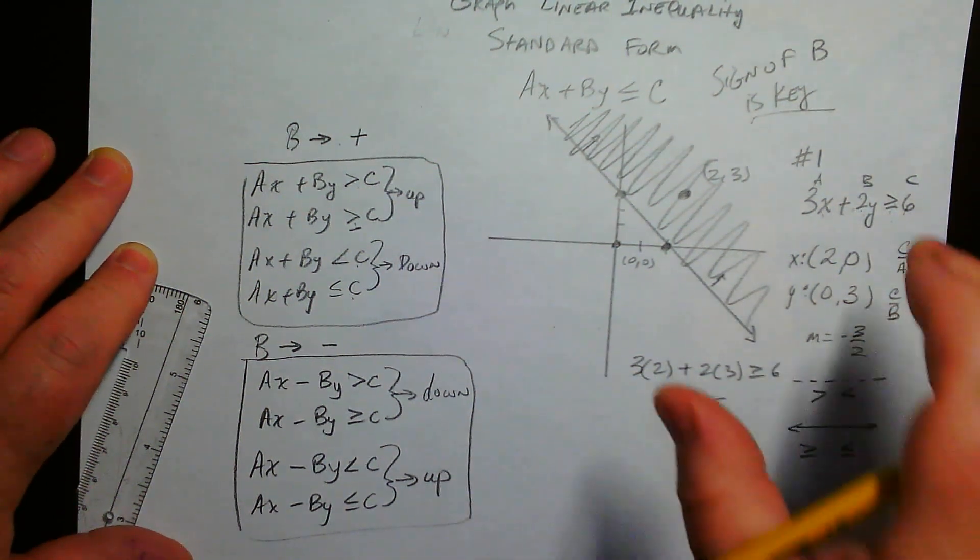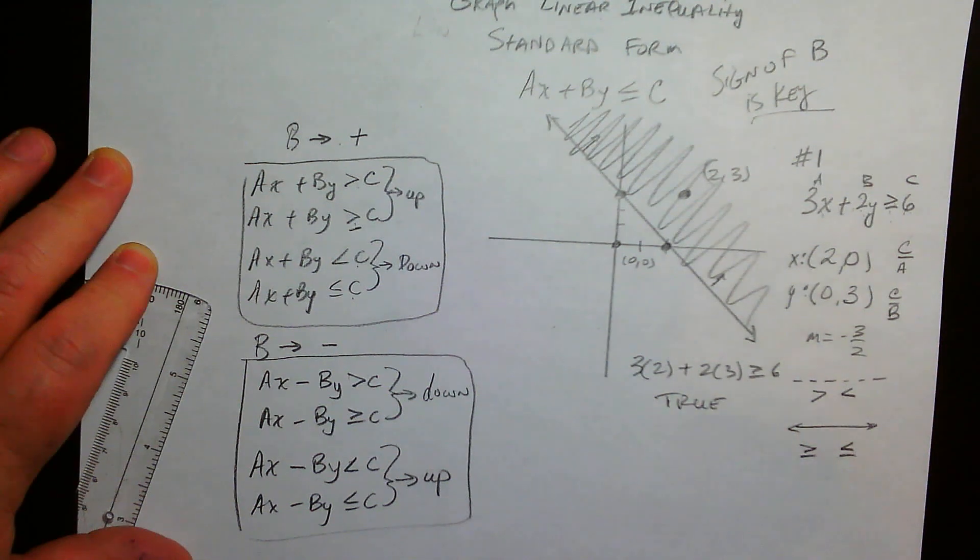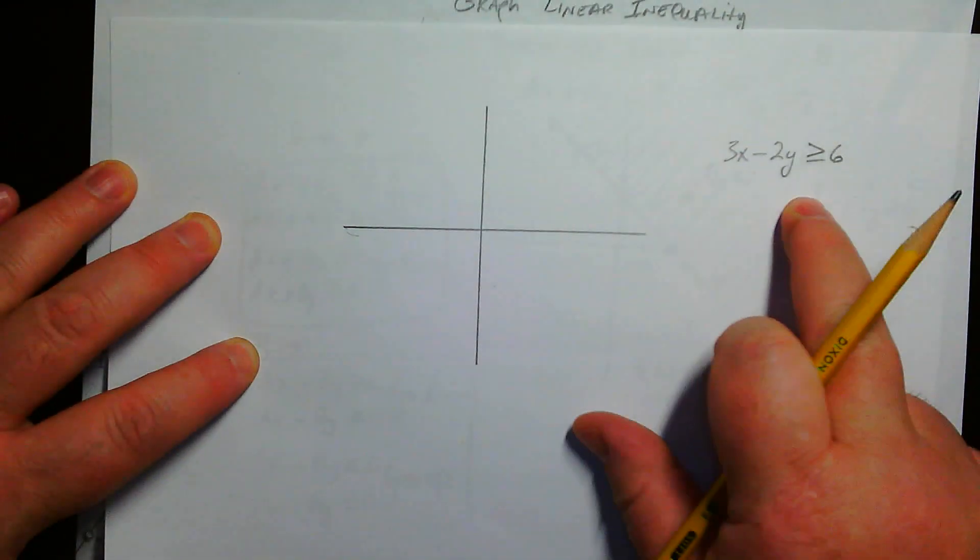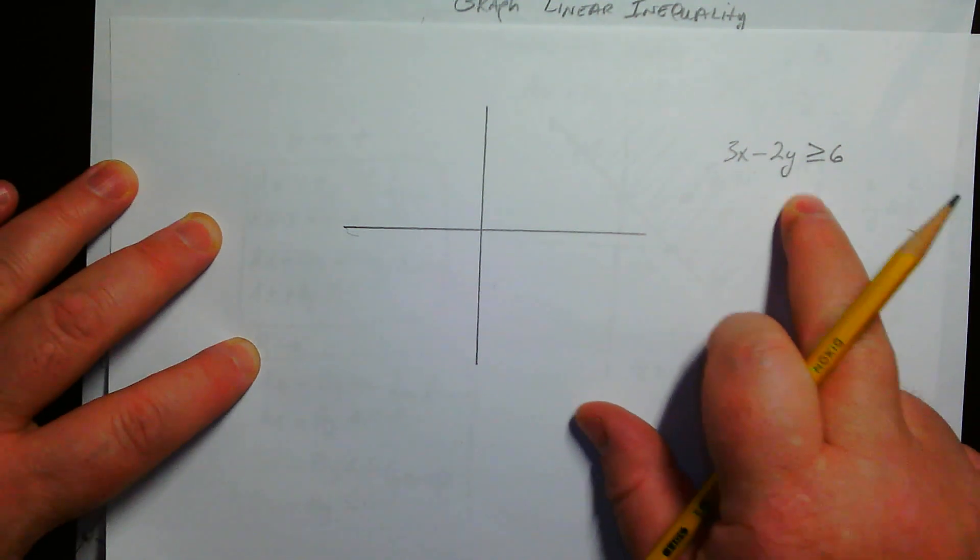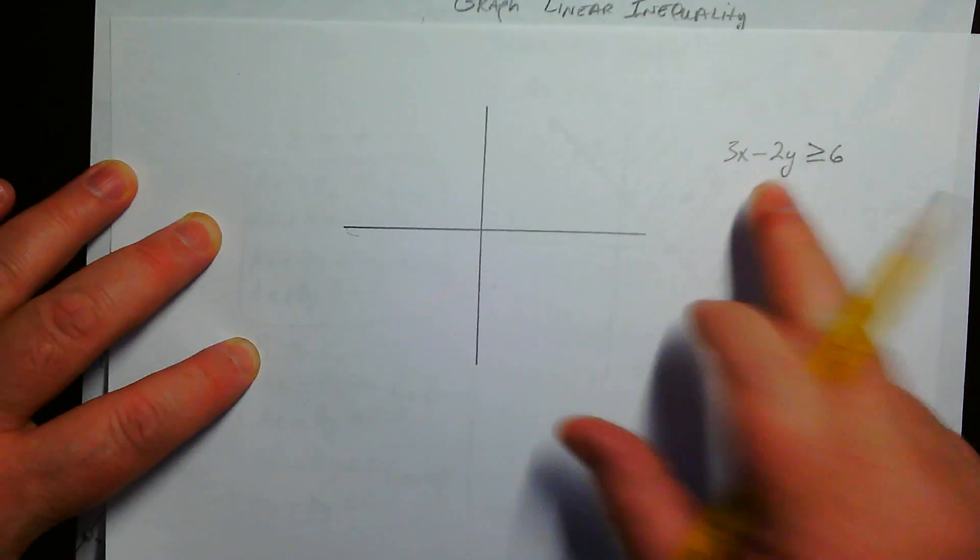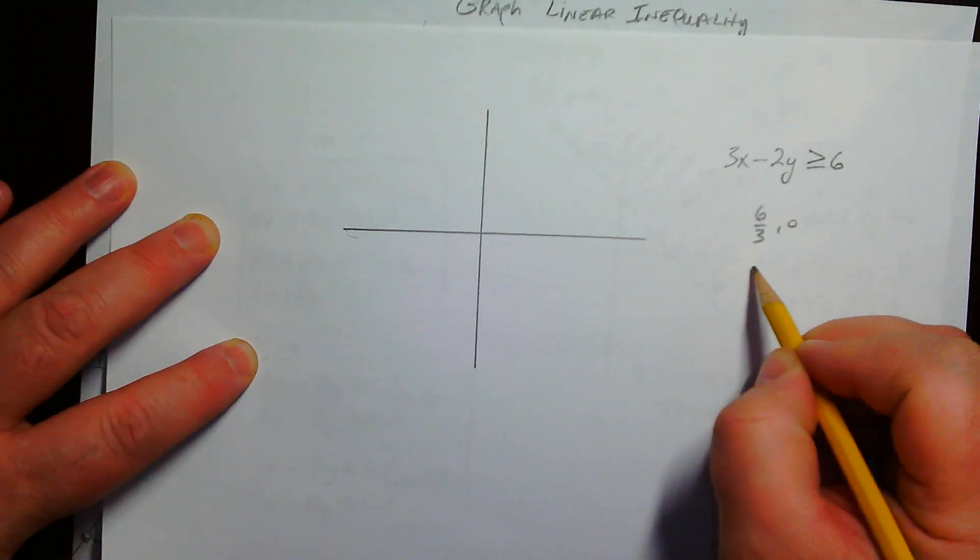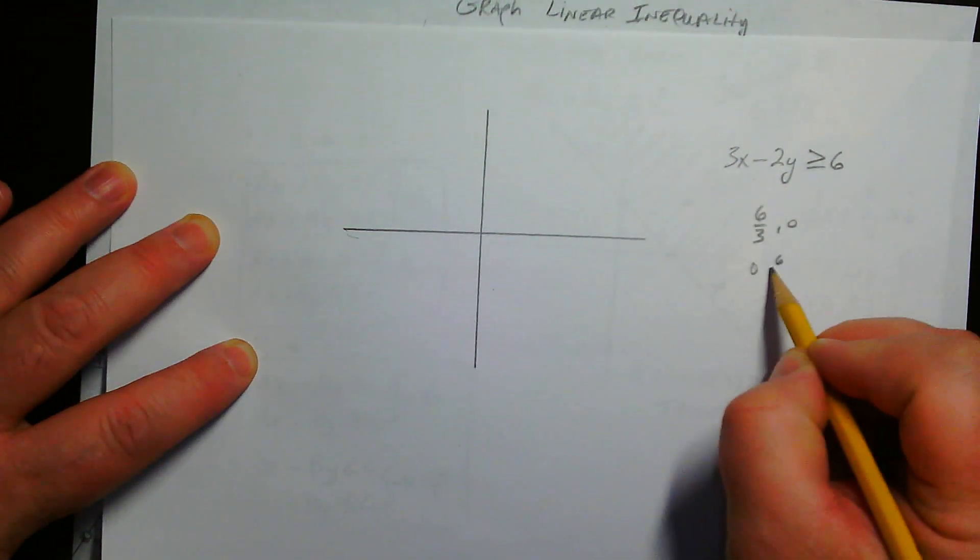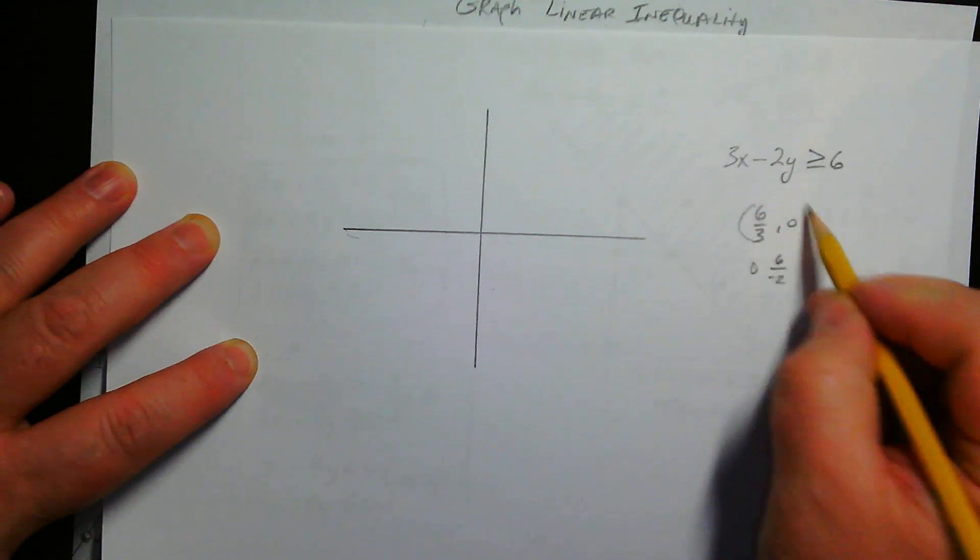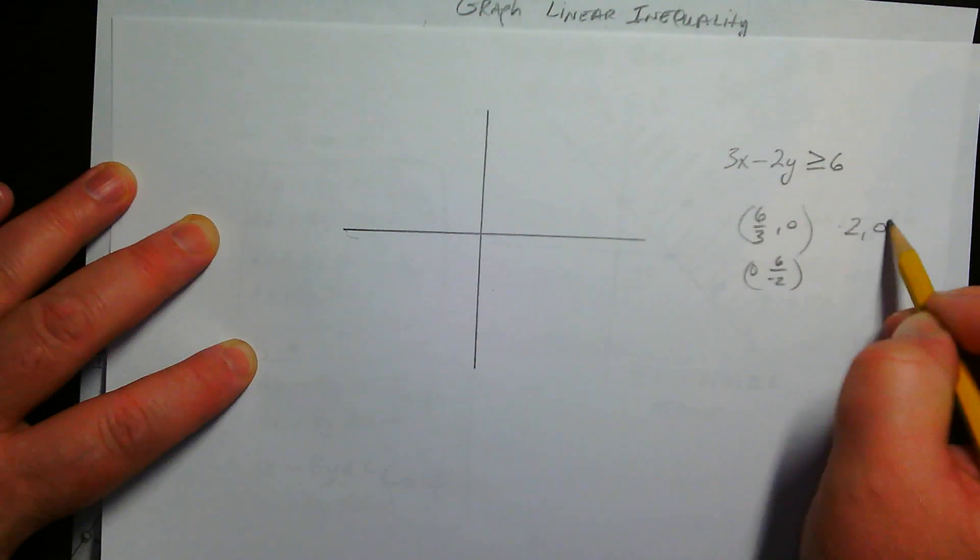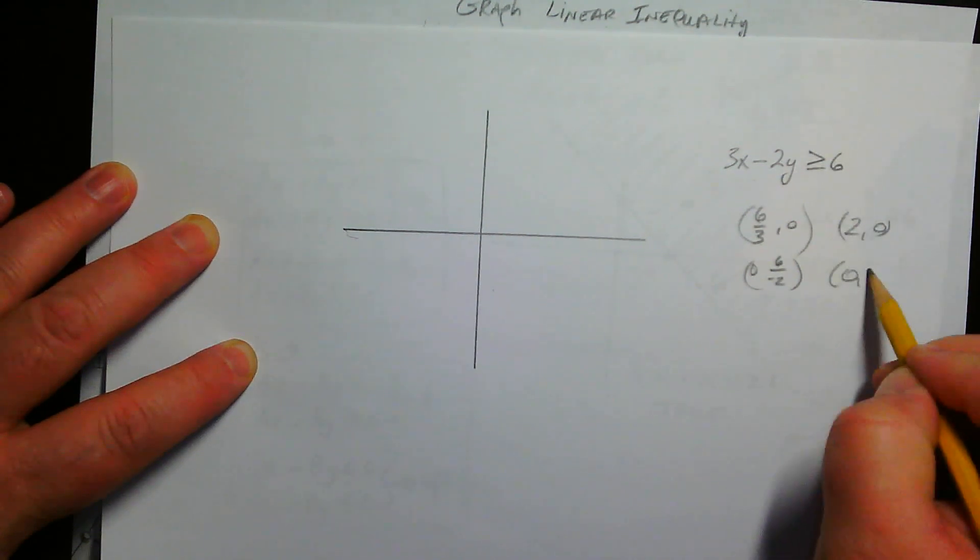Let's talk about the other case. So what I've got here, almost the same exact equation, except now we have B is negative. So same thing, we're going to find our intercepts. We're going to do 6 over 3, and we're going to do 6 over negative 2. So here are our intercepts. We have that's 2, 0, and that is 0, negative 3.